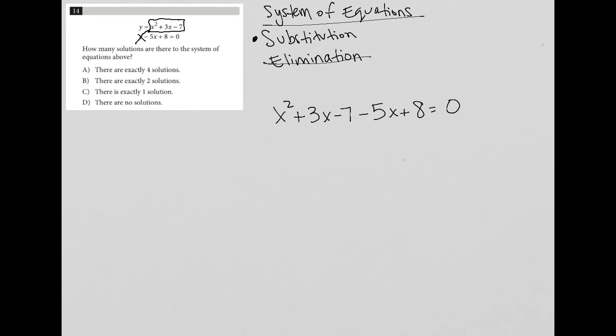So now when I simplify this, I have x squared, 3x minus 5x becomes negative 2x, negative 7 plus 8 becomes positive 1, and then I have equal 0. And now can I factor this trinomial?